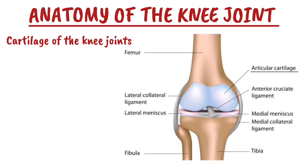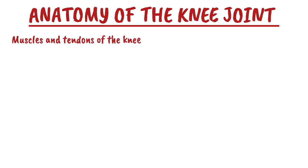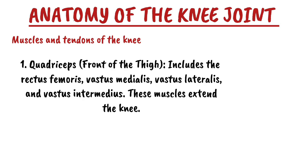Now let's talk about the muscles and tendons of the knee. The muscles and tendons work together to provide movement and stability. The key muscles are grouped into the quadriceps, which are at the front of the thigh. They include the rectus femoris, the vastus medialis, the vastus lateralis, and the vastus intermedius. These muscles extend the knee.